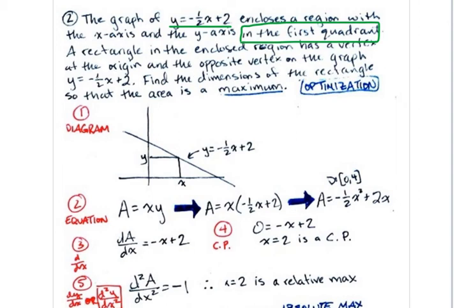So some rectangle in the enclosed region, it's going to have a vertex at the origin, and its opposite vertex is going to be on the graph of y equals negative 1/2 x squared plus 2. We're asked to find the dimensions of the rectangle so that the area is a maximum.